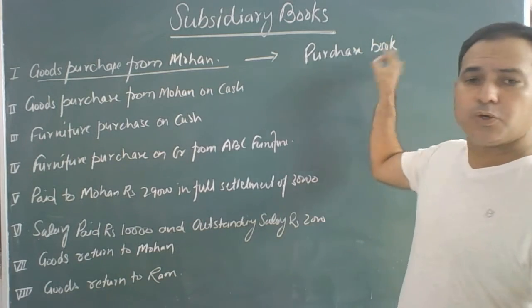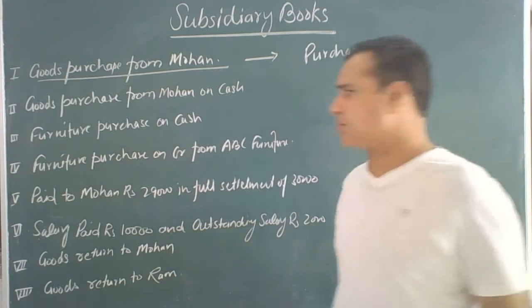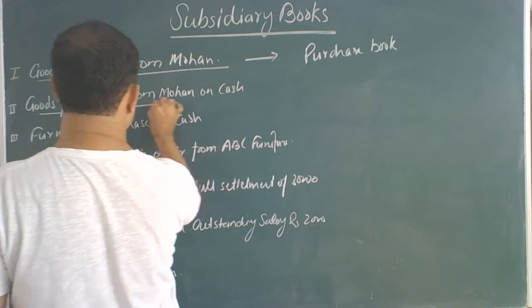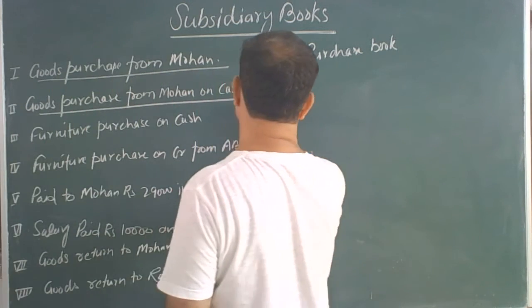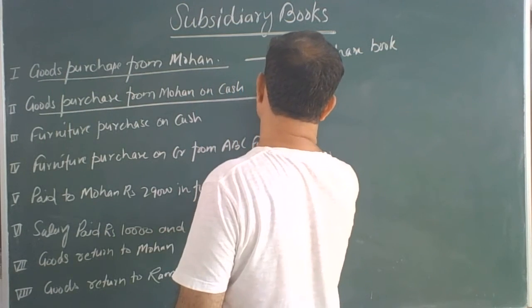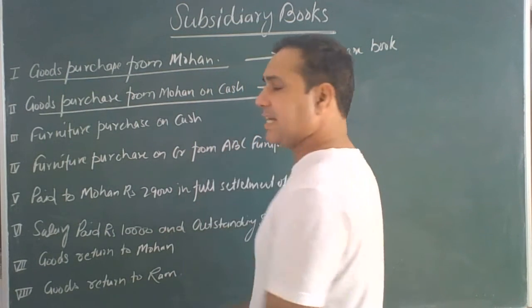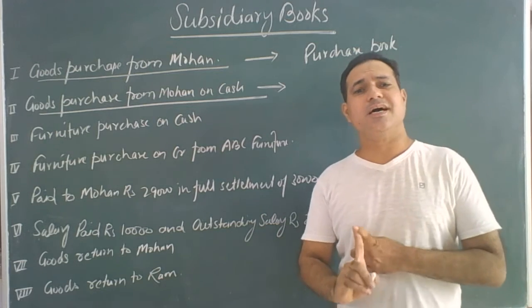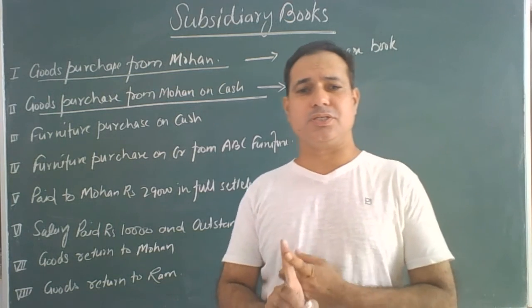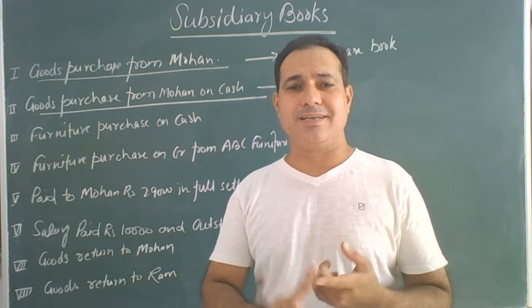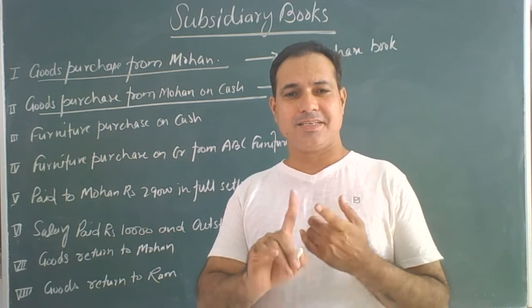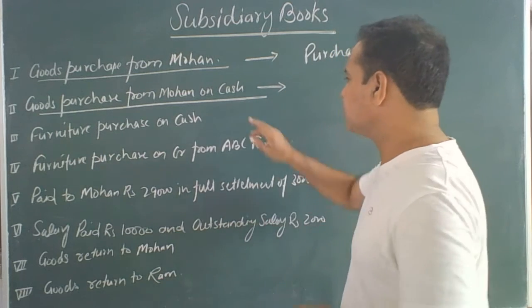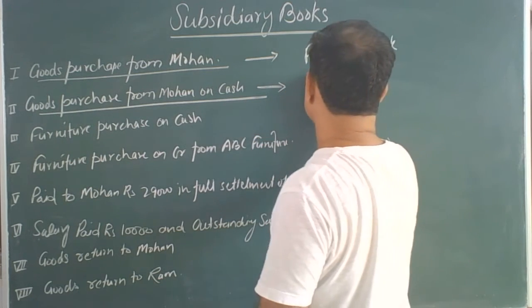The next transaction is goods purchased for cash. This time the goods are purchased in cash, so it will go to the cash book.